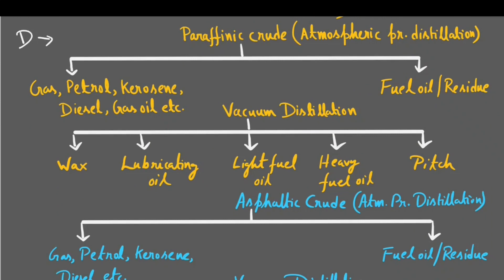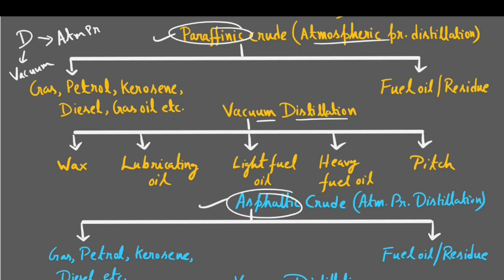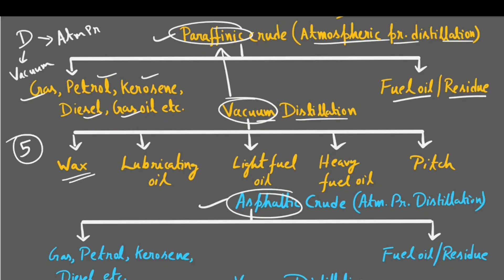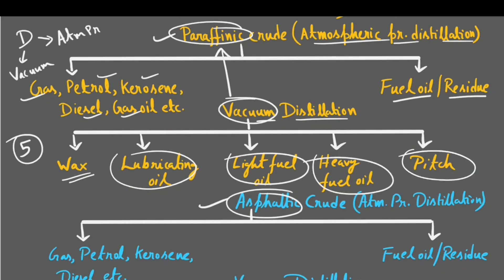There are two kinds of distillation: atmospheric pressure distillation and vacuum distillation. Taking paraffinic crude as an example, atmospheric distillation gives a mixture of gas, petrol, kerosene, diesel, and gas oil in one portion, and fuel oil and residue in another. Applying vacuum distillation to paraffinic crude gives five separate portions: wax, lubricating oil, light fuel oil, heavy fuel oil, and lastly pitch — which is bitumen, very useful for road making.